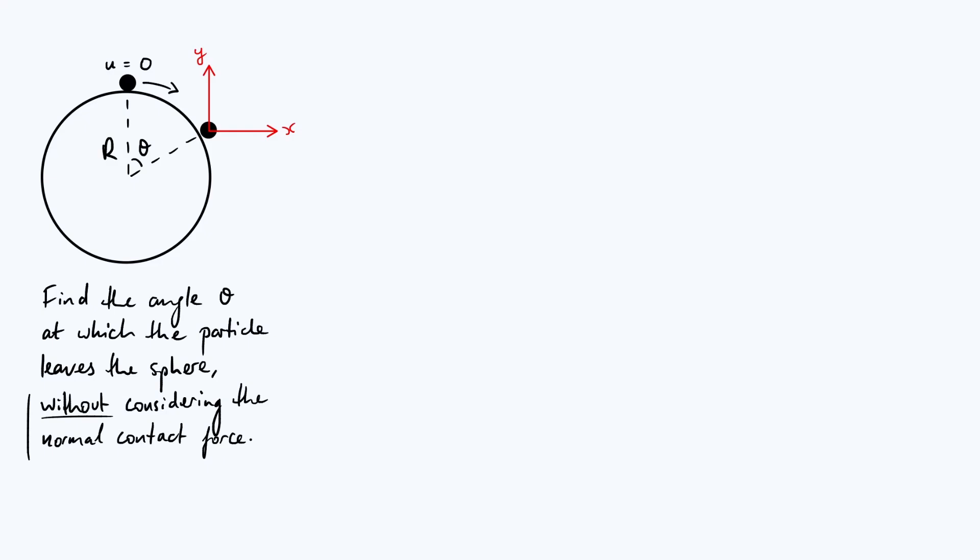In order to know the shape of the trajectory we need to know the initial state of motion. Initially it's moving in a circle, right? It's been sliding down the surface so the velocity is always directed tangentially.